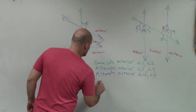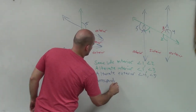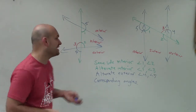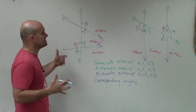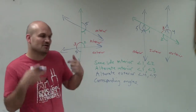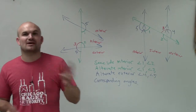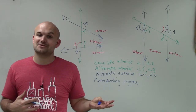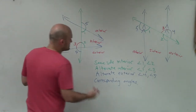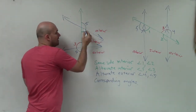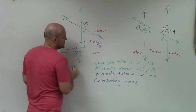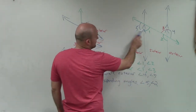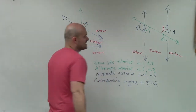The last one we're going to talk about is corresponding angles. Corresponding angles are when we have one angle that's on the interior and one on the exterior, and they're also on the same side. Corresponding angles don't specifically say interior or exterior — that's a clue that both may be involved. They're on the same side: one is exterior, one is interior. An example would be angle five and angle two.